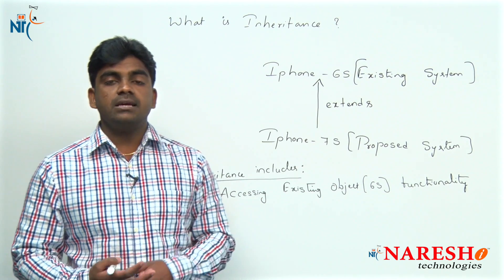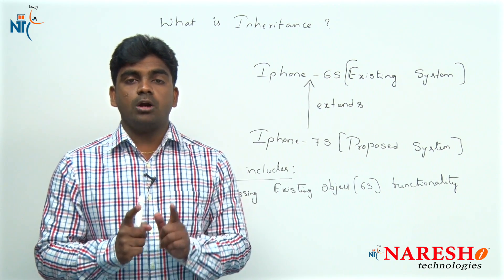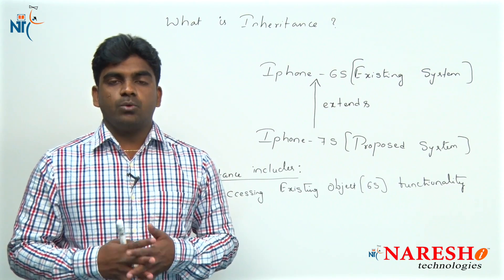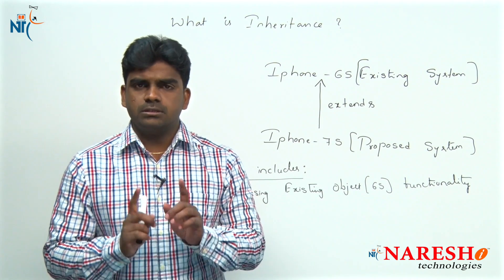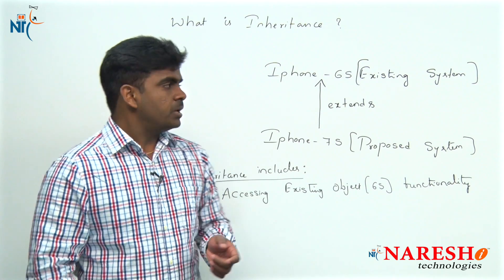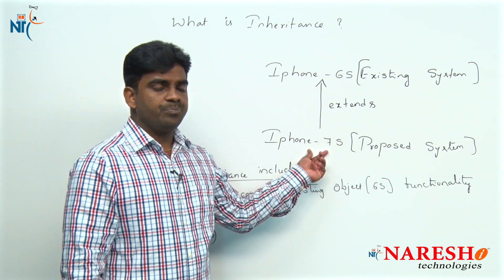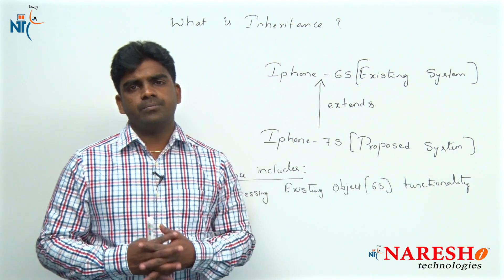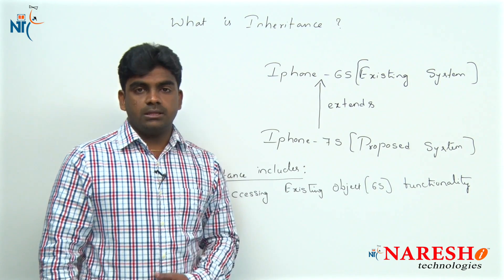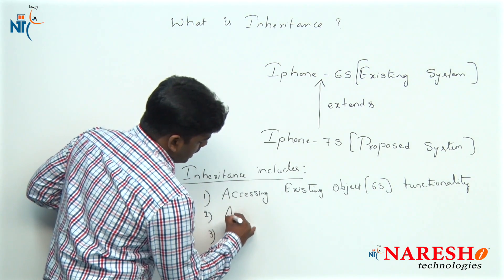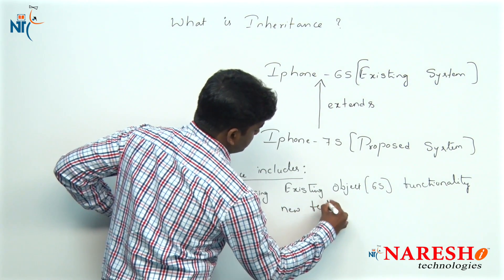Inheritance includes the first point: accessing existing functionality. But accessing is not the only matter. Most people say inheritance means accessing existing object functionality into the child — that is not the correct way. If you are only accessing 6s features in 7s, why purchase 7s at all? We expect some more things from 7s. The second one is adding new features.